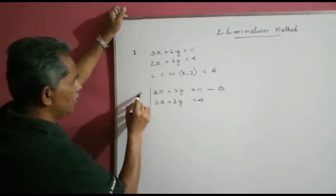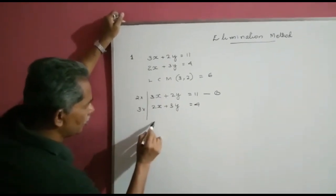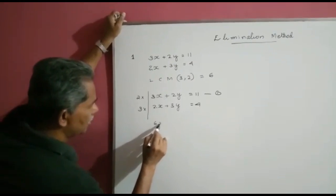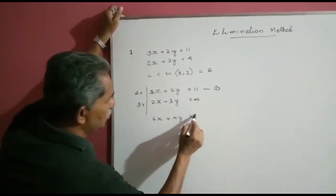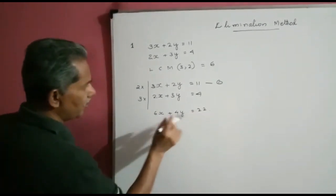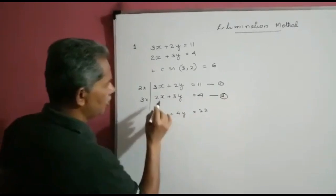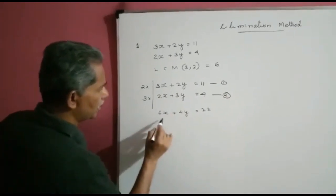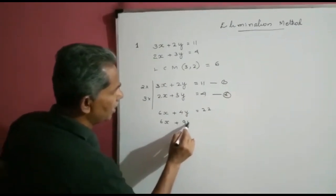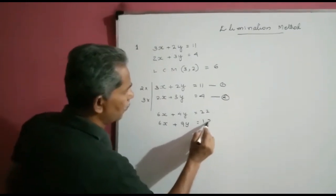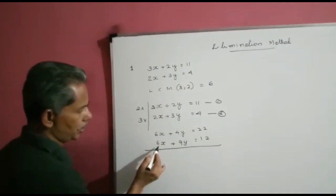Multiplying the first equation by 2 and the second equation by 3: we get 6x plus 4y is equal to 22, and multiplying equation 2 by 3 gives 6x plus 9y is equal to 12. Thus the coefficients of x are made equal to 6.